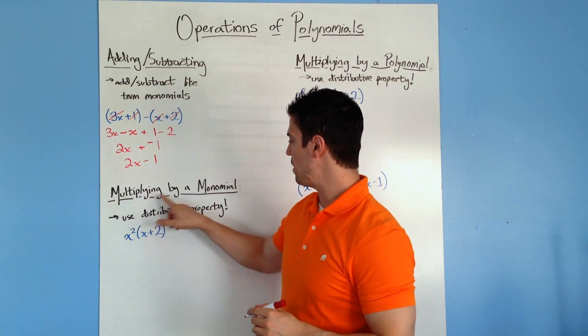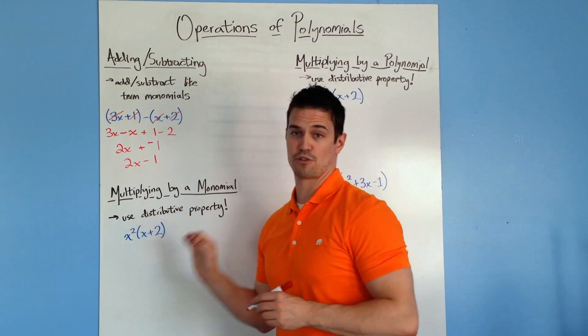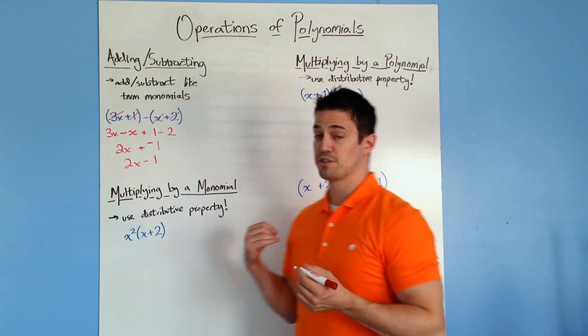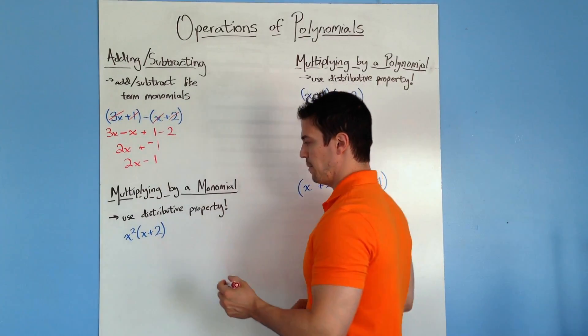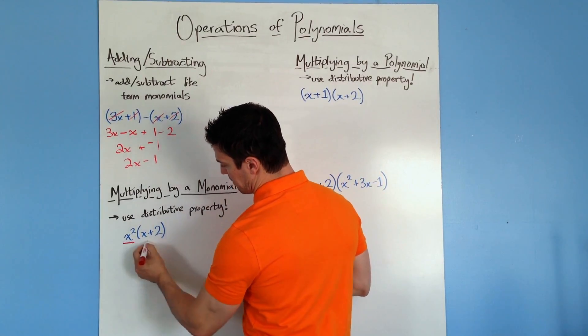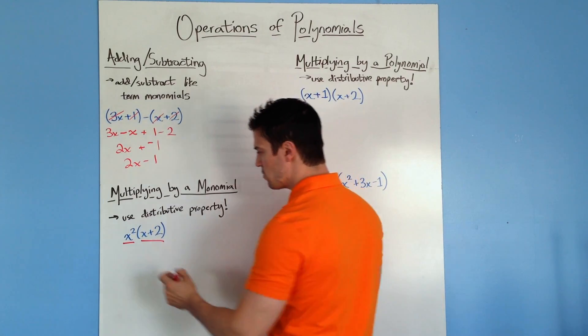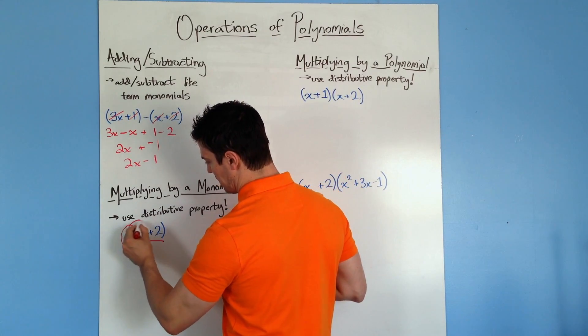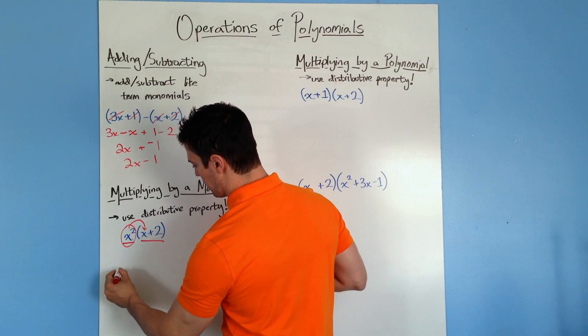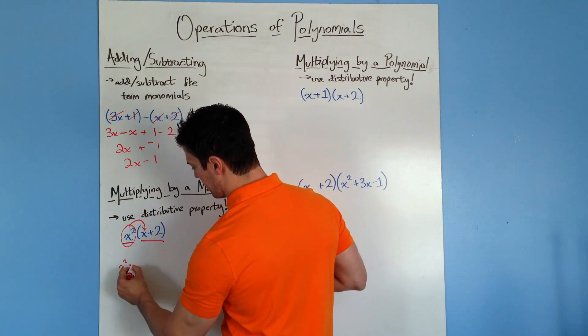The next one, multiplying by a monomial. You have to use the distributive property. So it's similar to the distributive property using numbers, only this time I'm using monomials here and the polynomial here. So you're going to take this number and multiply it by this first term. So you end up with x squared times x.